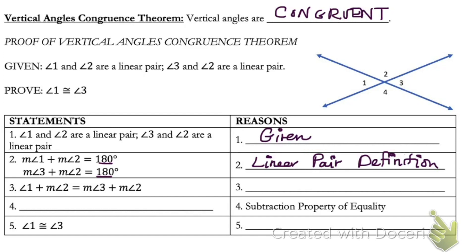Going from line two to line three: we have the measure of angle one plus the measure of angle two equals the measure of angle three plus the measure of angle two. From line two, we know both expressions equal 180 degrees. So if angle one plus angle two equals 180 degrees, and angle three plus angle two also equals 180 degrees, then angle one plus angle two must equal angle three plus angle two — by the transitive property. The transitive property says that if two things are equal to the same thing, in this case 180 degrees, then they must be equal to each other.